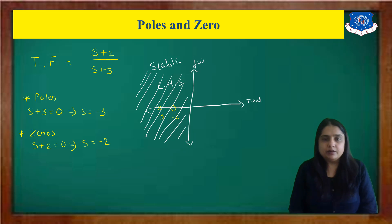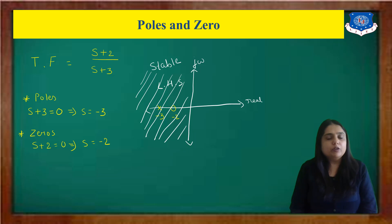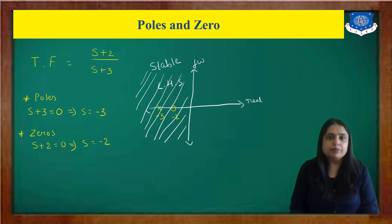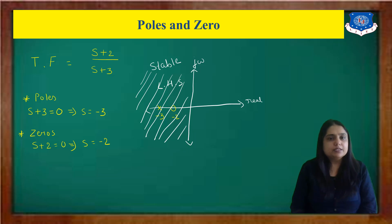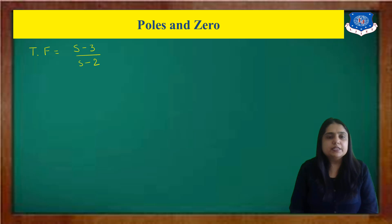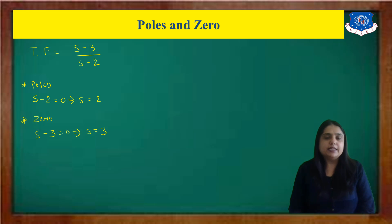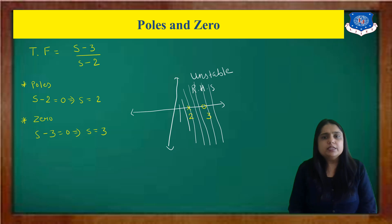In a network theory exam, a short note on poles and zeros may be asked. You should explain with examples of stable, unstable, and marginally stable systems. For a stable example, consider (s+2)/(s+3) — poles and zeros on the left-hand side. For an unstable example, consider (s−3)/(s−2): the pole is at s=2 and zero at s=3, both on the right-hand side of the s-plane, making the system unstable.